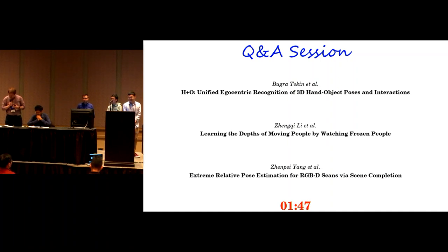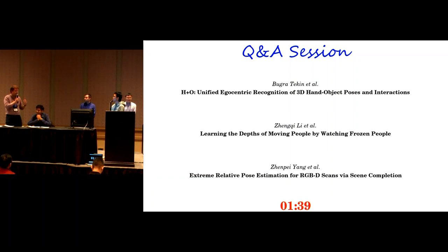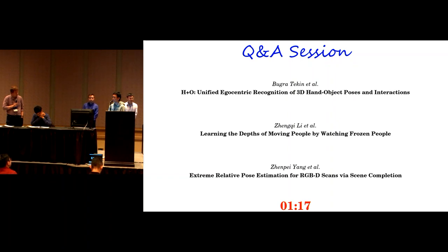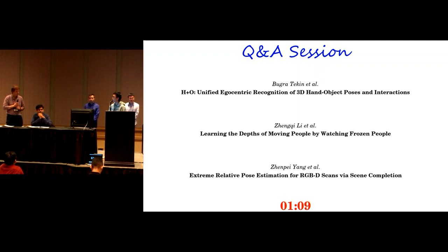Question for the relative pose speaker: when predicting things like walls in a four-walled room, there are often ambiguities. In the no-overlap case, do you have issues with multimodal possibilities? Yes, there are many ambiguities in no-overlap cases. One future direction is to generate multiple answers for no-overlap case registration rather than a single estimate.